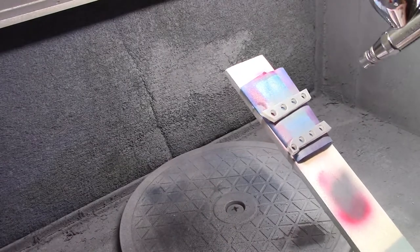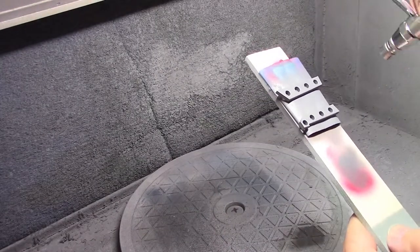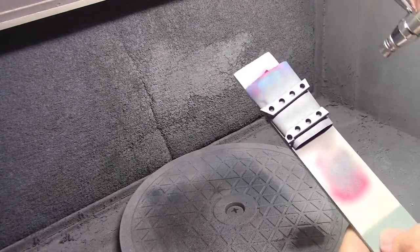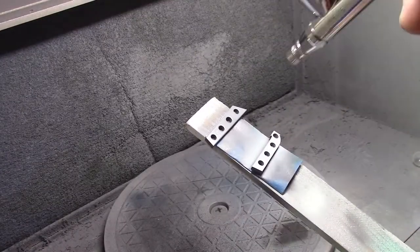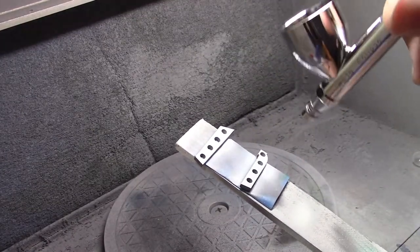The arrow parts are primed and sprayed white. There are 3mm holes in the arrows, which will house 3mm LEDs.